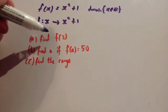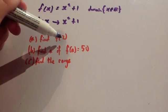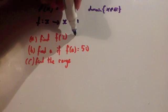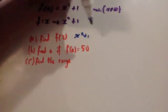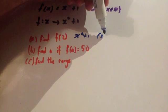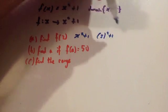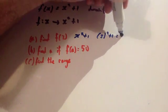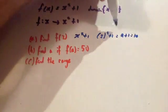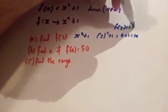First question: find f(3). That means you're going to put 3 into the function. The function is x² + 1, so you're going to do 3² + 1. 3 squared is 9, plus 1 equals 10. So f(3) = 10.